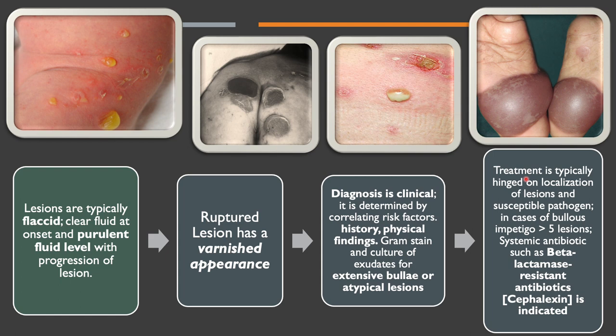Treatment is typically hinged on localization of lesions and susceptible pathogens. In cases of Bullous Impetigo, especially those with presentation of greater than five lesions, systemic antibiotic such as beta-lactamase-resistant antibiotic, namely cephalexin, is indicated.